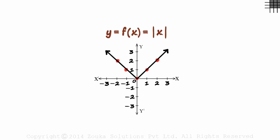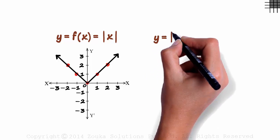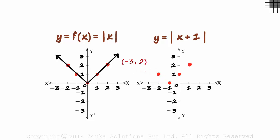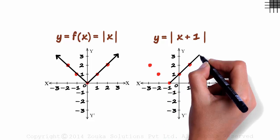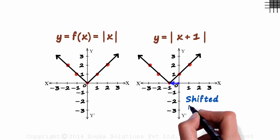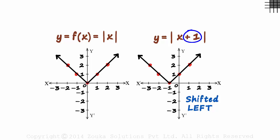We know the graph of our original function f of x equal to the absolute value of x. What if the function is y equal to the absolute value of x plus one? Here we added one just to the input x. If x is zero, then y will be one. If x is one, then y will be two. If x is minus one, then y will be zero. If x is minus two, then y will be the absolute value of minus one, which is one — so minus two comma one is another point. And minus three comma two will be another. Joining the points, the graph would look like this. Comparing it to the original graph, this one has shifted to the left by one unit. Adding a constant to the input shifts the graph towards the left.